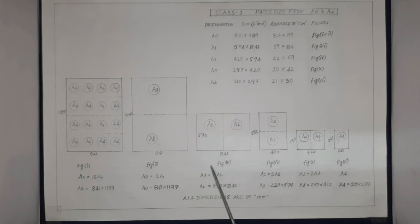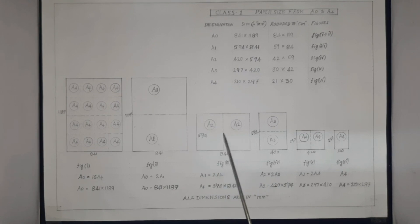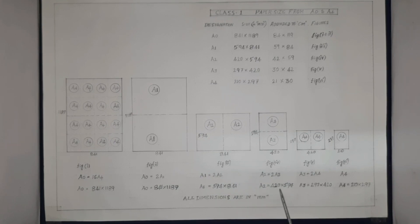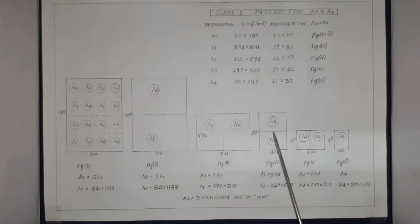Similarly, the A1 paper is shown in Figure 3. The size of the A1 paper is 594 mm × 841 mm. When the A1 paper is folded at the dotted line at the center, we get two A2 papers. Next, in Figure 4, the A2 size is given as 420 mm × 594 mm. Folding the A2 paper at the center gives two A3 papers.